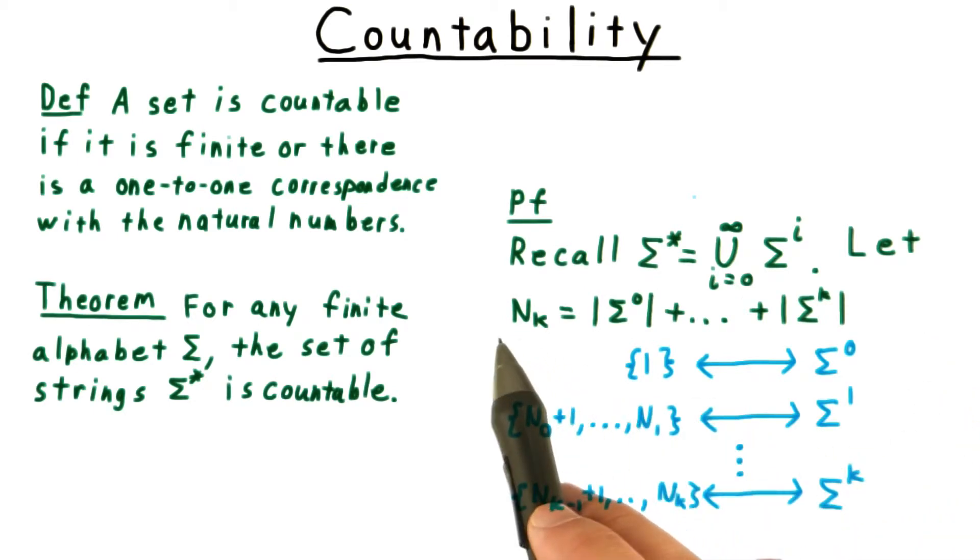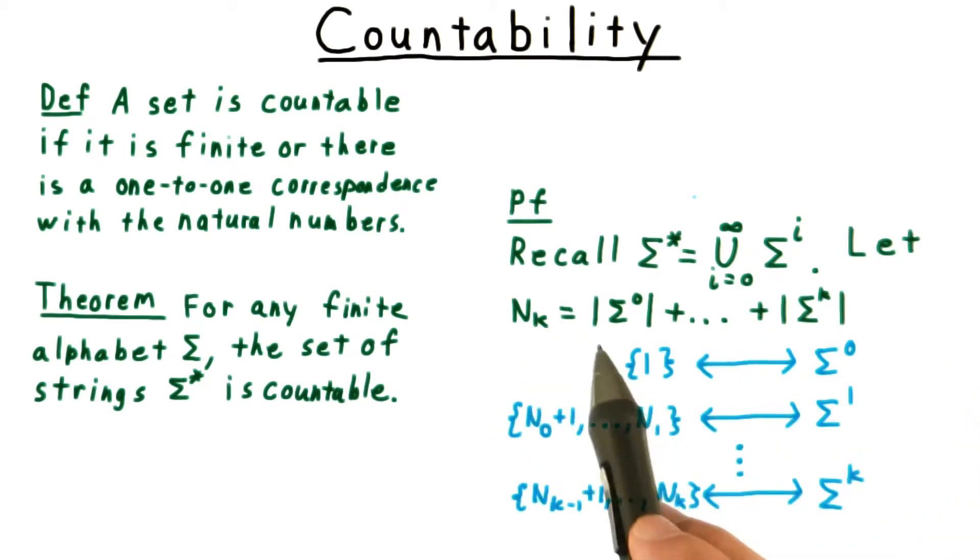More formally, we can define n sub k to be the total number of strings of size at most k, and then use this to create the correspondence. Thus, n_k will be the last number assigned to a string of length k.